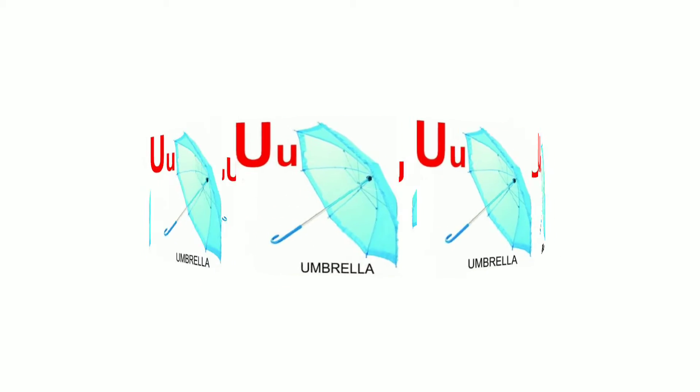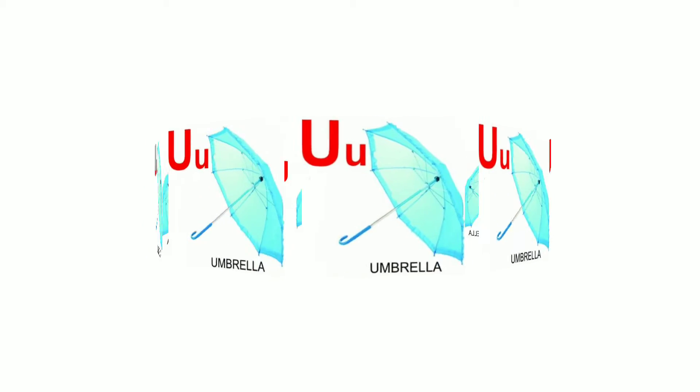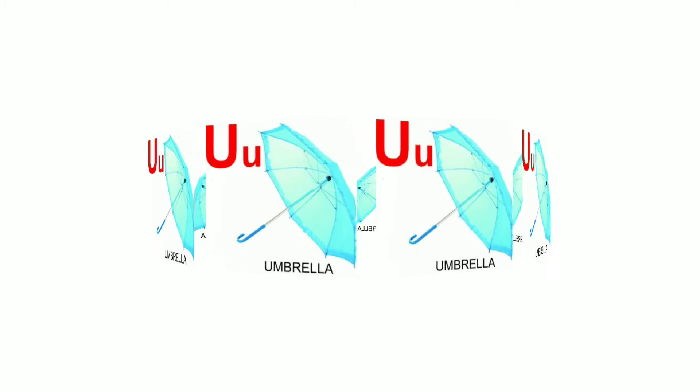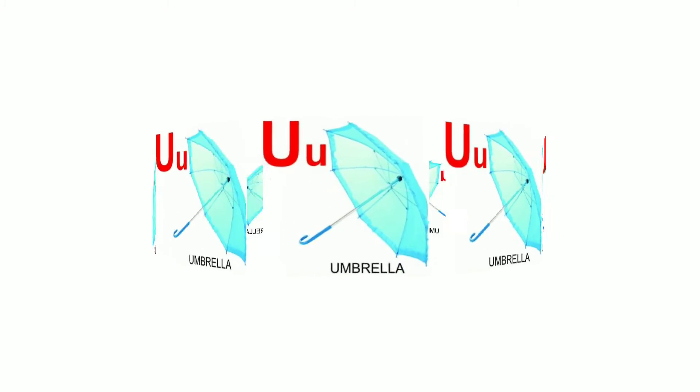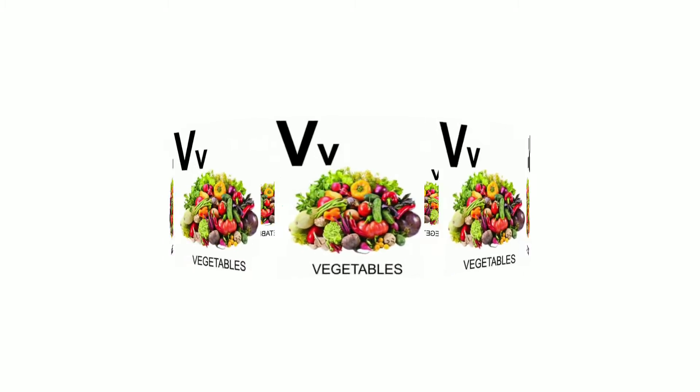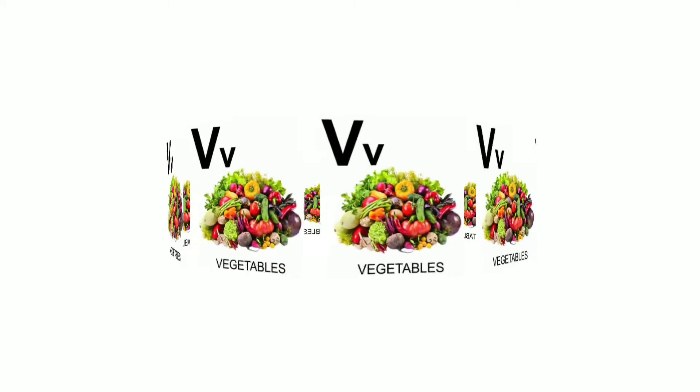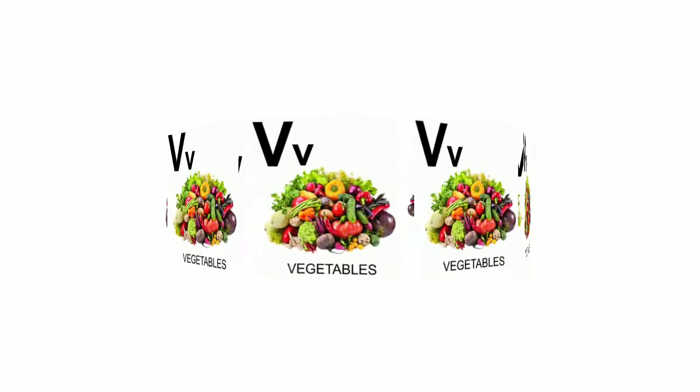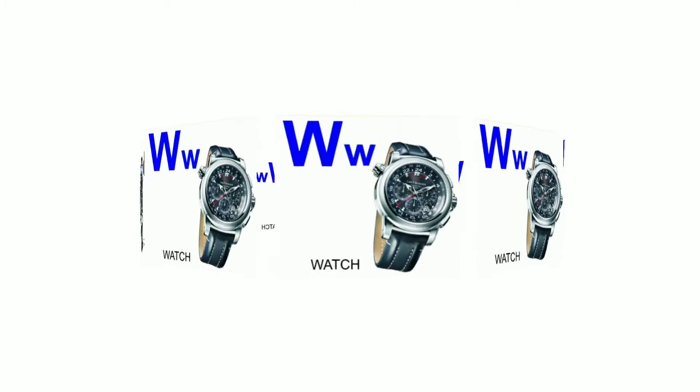U for umbrella, V for vegetables, W for watch.